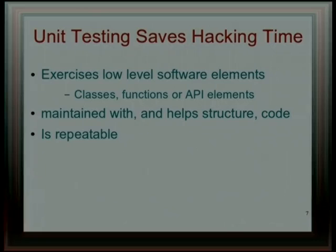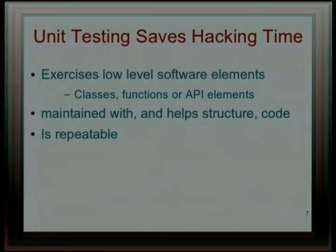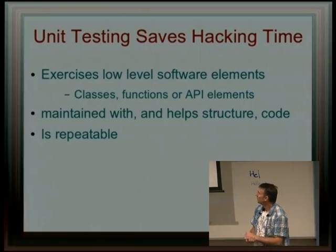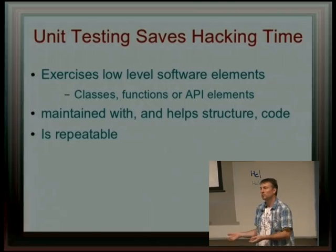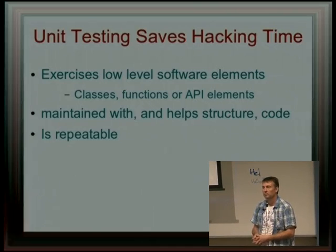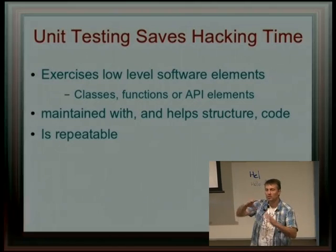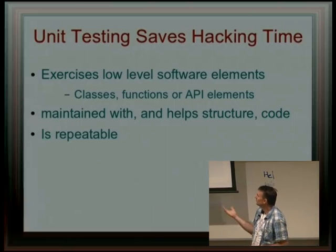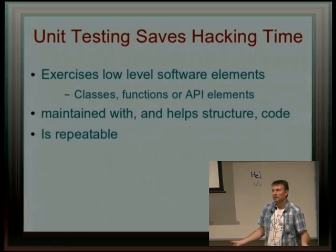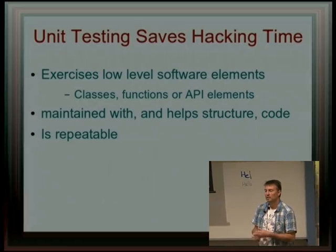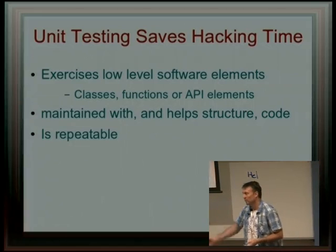Unit test code is maintained in your code base — I find this really quite important. A lot of new developers will write a test program and throw it away, but you should turn it into a unit test and put it in git or subversion somewhere, because you want to run it again. Regression testing is important, so maintain unit test code with your normal code. If you've got to write the unit test code, it helps you to structure your code — especially when you're developing stuff in an agile way. Often when you sit down and write the unit test, you realise you might be able to design your API or your code better. And unit testing gives you the benefit of being able to repeat the test: you make a change, run the test again, and it shows up sooner rather than going through the whole integration packaging cycle and finding it broken on the end user's computer.